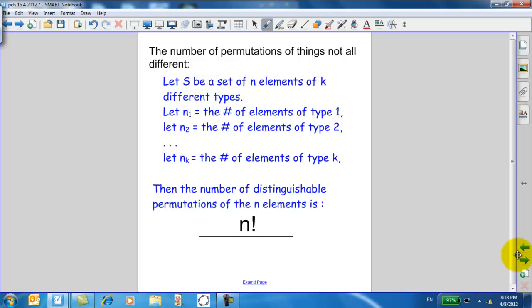So the number of permutations of things is not all different. Here's the formula. Let S be a set of N elements of K different types, and let N1 equal the number of elements of type 1, N2 equal the number of elements of type 2, etc., until you get to N sub K equals the number of elements of type K. Then the number of distinguishable permutations of N elements is, you basically have to divide out the repeats. So you have to take N1 factorial, N2 factorial, N3 factorial, times, times, times, all the way up to N sub K factorial. And amazingly, this always works out to still be a whole number, not a fraction.